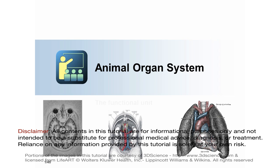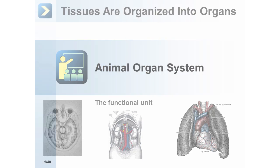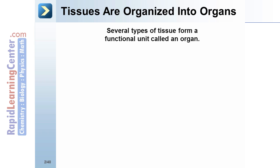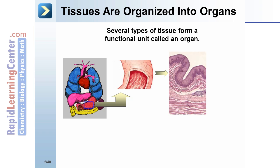Animal organ systems: tissues are organized into organs. Several types of tissues form a functional unit called an organ. Here is a stomach — let's take a closer look. Taking a segment of the stomach and blowing it up, we find it consists of multiple tissue types.